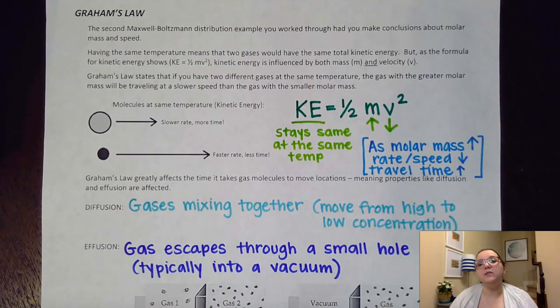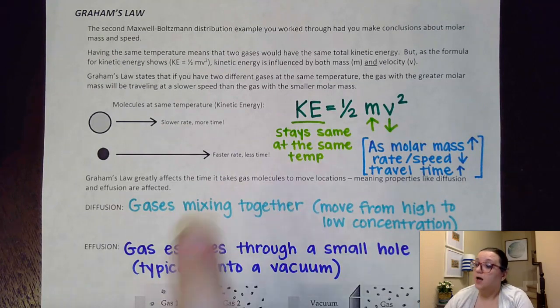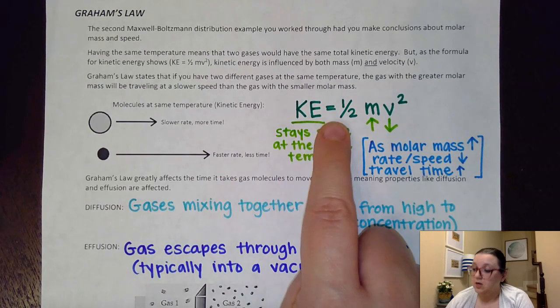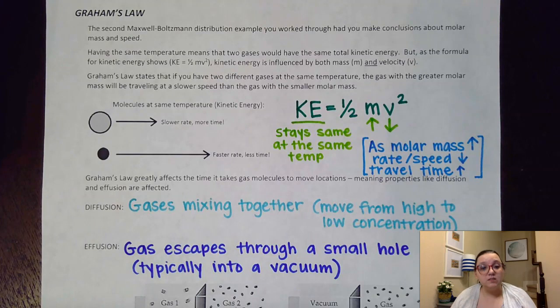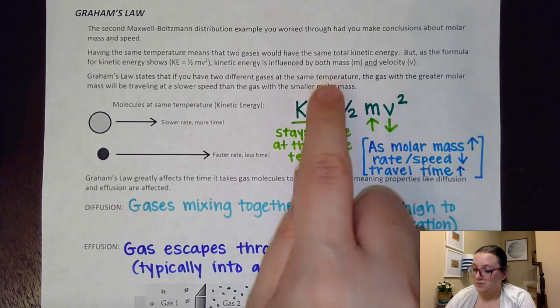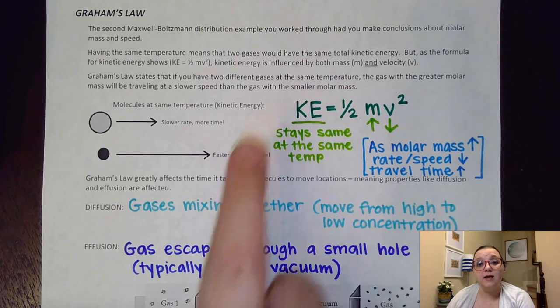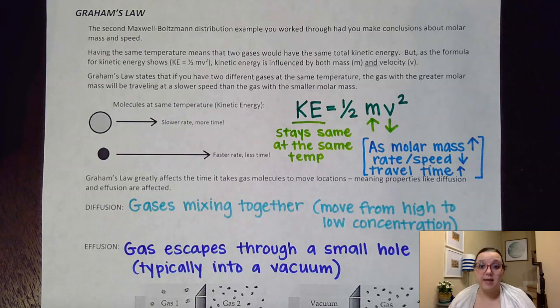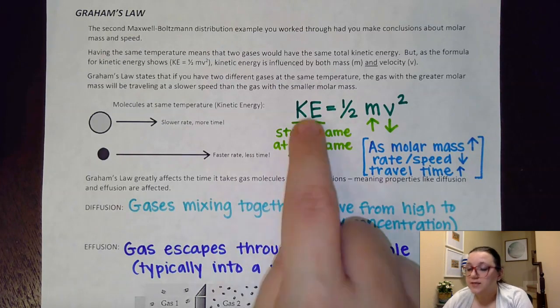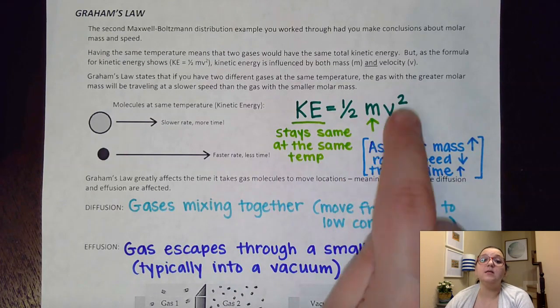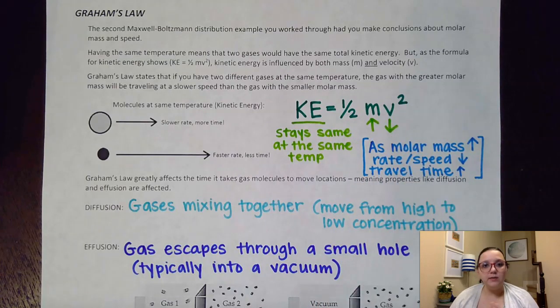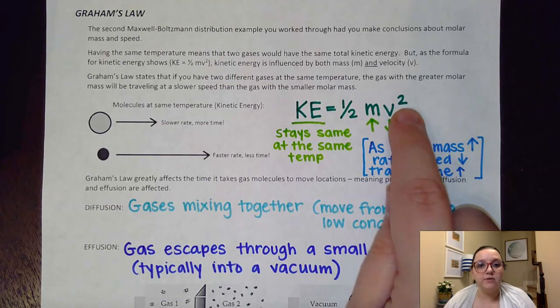Now the reason why this relationship works has to do with the formula of kinetic energy equaling one-half mv squared, which is mass and velocity here. Velocity being the speed of our gas particles. So if I have two gases that are at the same temperature, what that means is that our kinetic energies of both of those samples are the same. And so in order to keep this the same, if I increase the mass, then the velocity would have to decrease.